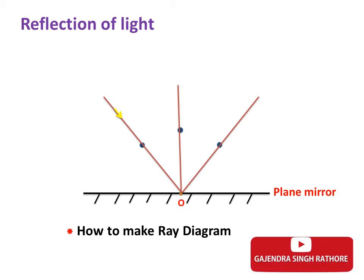This is our incident ray. This is our normal and this one is reflected ray. Angle of incidence is 40 degrees and angle of reflection is also 40 degrees. Both we can say theta.